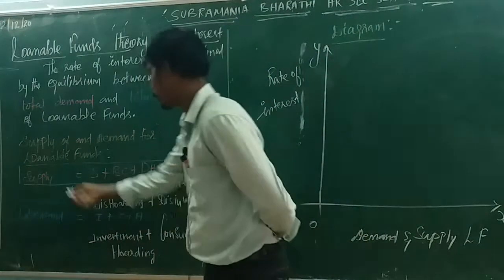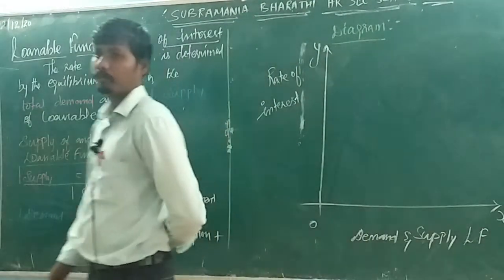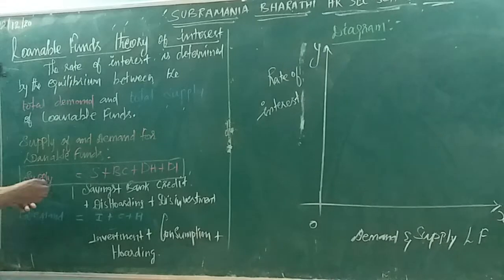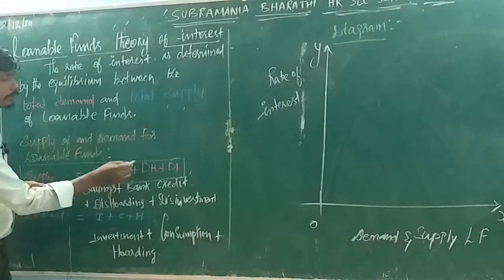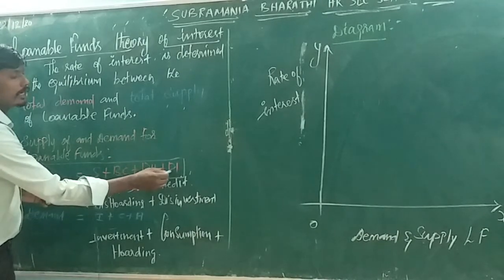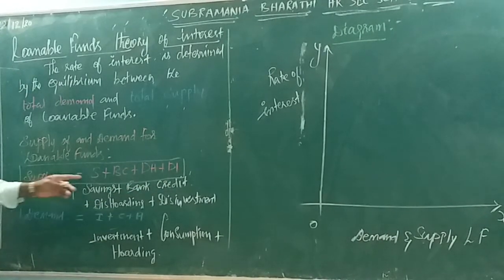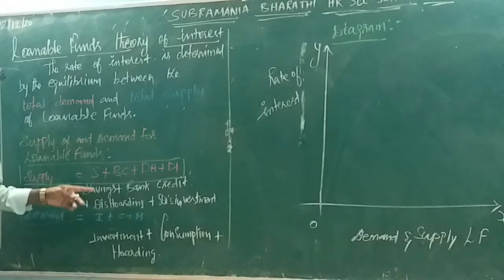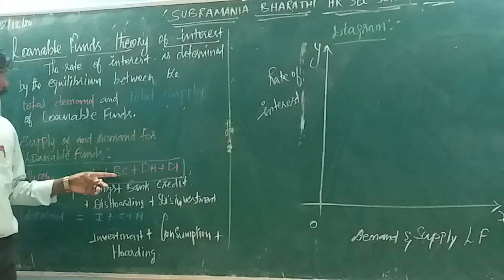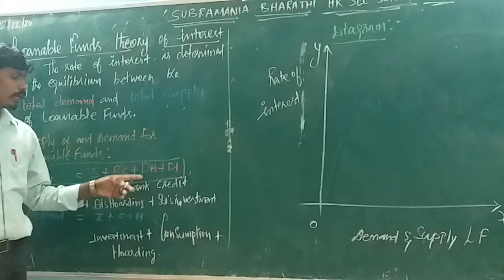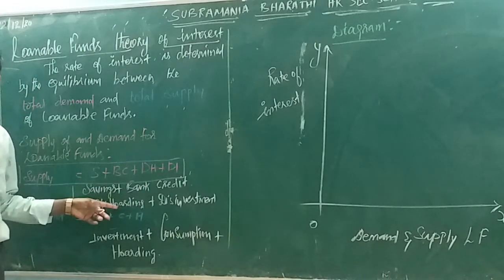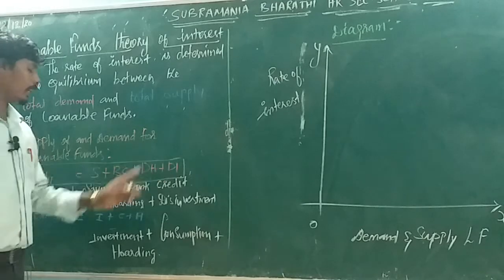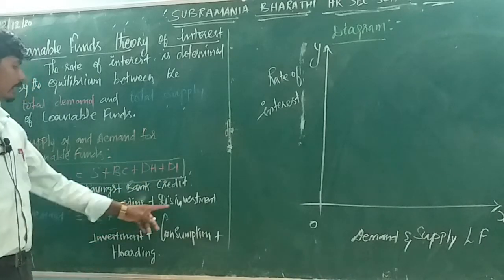There are two categories: supply and demand. The supply of loanable funds is equal to S plus BC plus DH plus DI — four categories. S equals Savings, BC equals Bank Credit, DH equals Dishoarding, and DI equals Disinvestment.